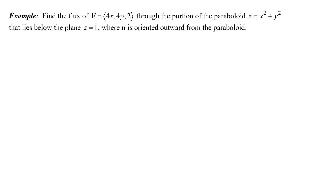We have a vector field made up of polynomial functions, so that vector field F is continuous everywhere — that was one of the conditions we needed. Our surface S is a portion of a paraboloid. I'm going to draw a little sketch: a basic paraboloid that opens up, with circular cross sections and vertex at the origin. The portion of the paraboloid lies below the plane Z equals 1, so just up to a height of Z equals 1.